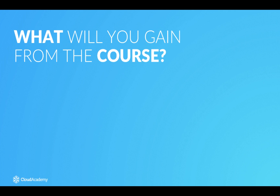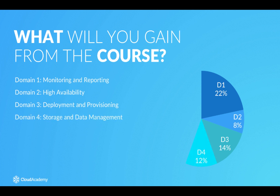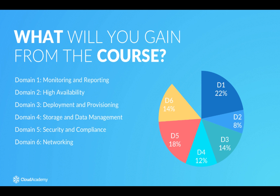You will be tested across seven different domains within the certification, with each domain contributing to a percentage of your overall score. Domain 1: monitoring and reporting at 22%. Domain 2: high availability at 8%. Domain 3: deployment and provisioning at 14%. Domain 4: storage and data management at 12%. Domain 5: security and compliance at 18%. Domain 6: networking at 14%. And finally, domain 7: automation and optimisation at 12%. Each of these domains can be broken down into defined areas of knowledge.